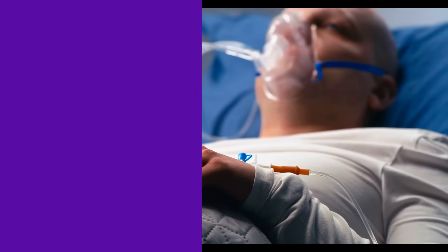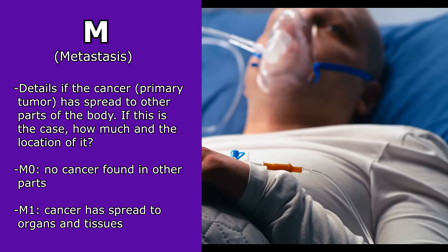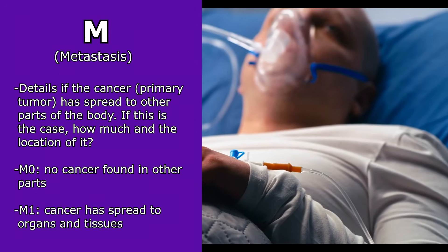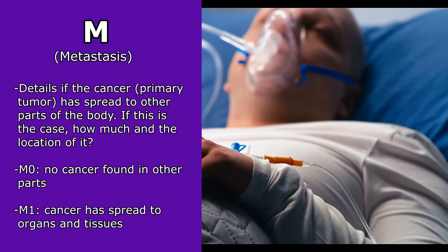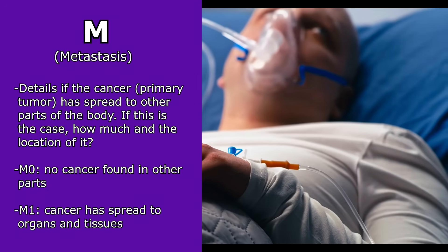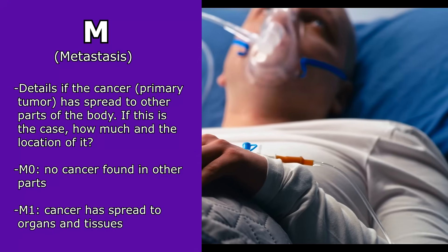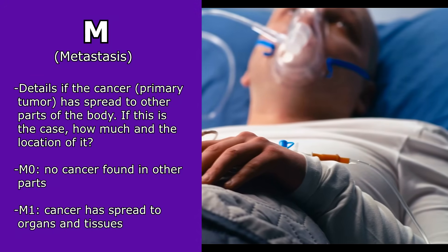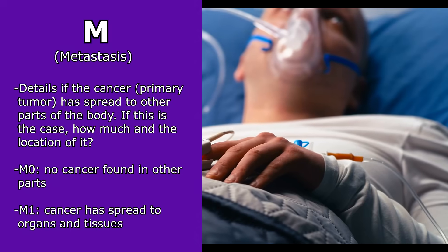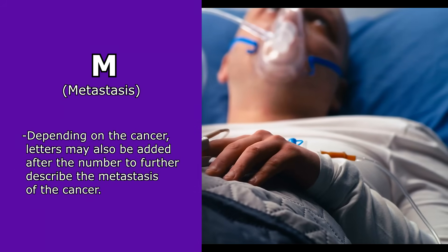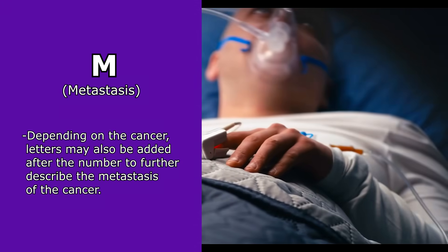The last category is M for metastasis. This details if the cancer — that primary tumor — has spread to other parts of the body, and if so, how much and where. M0 means no cancer is found in other parts. M1 means that cancer has spread to organs and tissues. Depending on the cancer, letters can be added after the number to further describe the metastasis to other body parts.